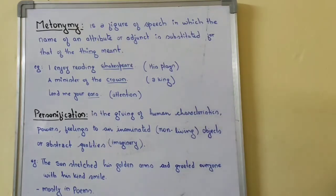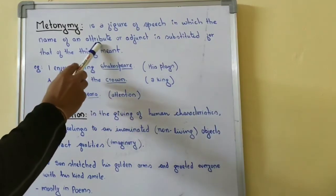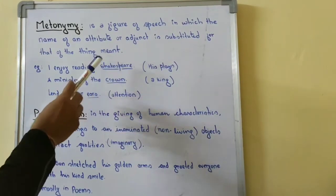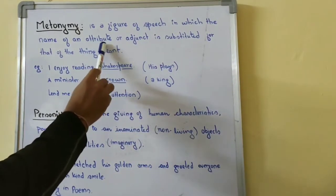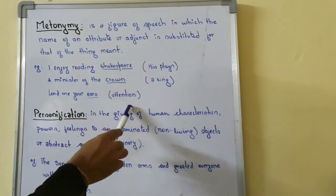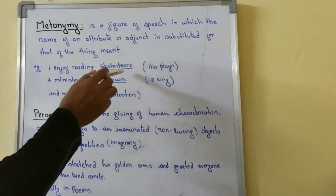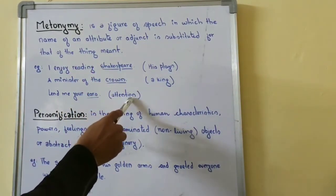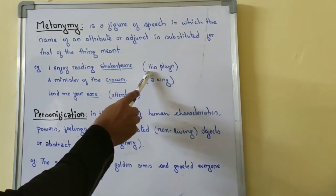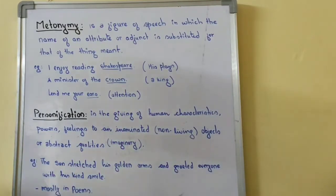Metonymy is a figure of speech in which the name of an attribute or adjunct is substituted for that of the thing it means. A quality, character, or associate is used or substituted to indicate its main meaning. For example, a crown or Shakespeare can be used as a quality or character to indicate a broader meaning.